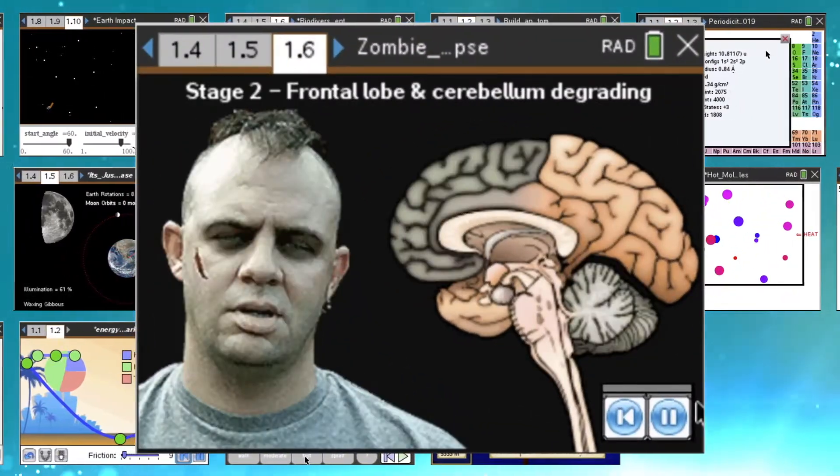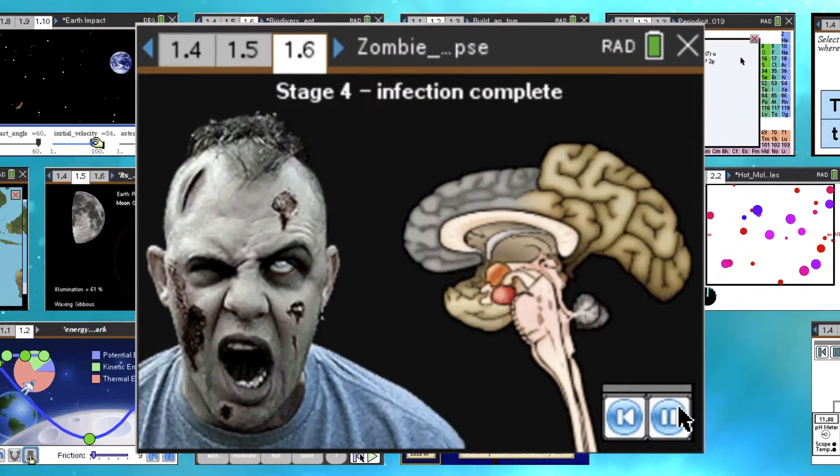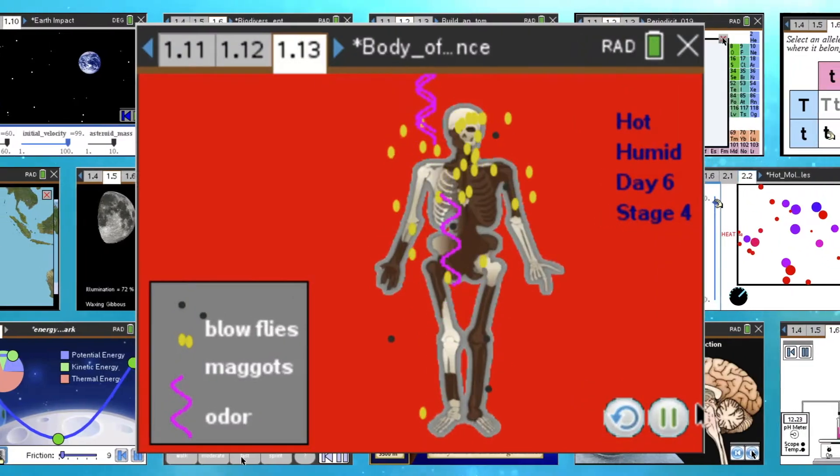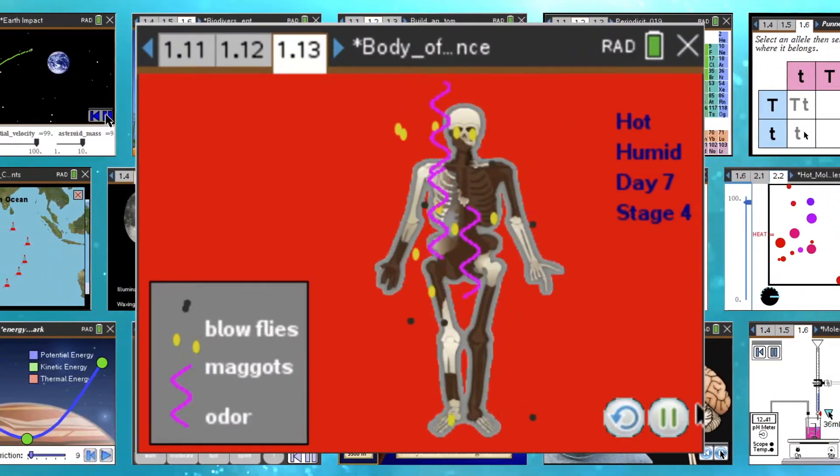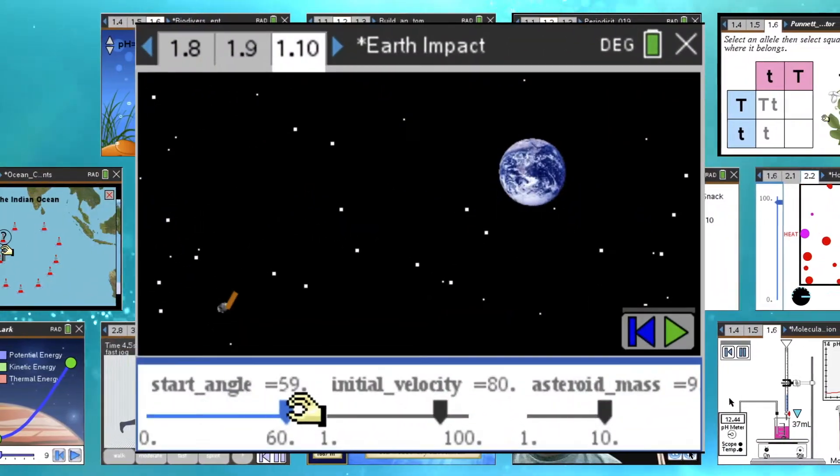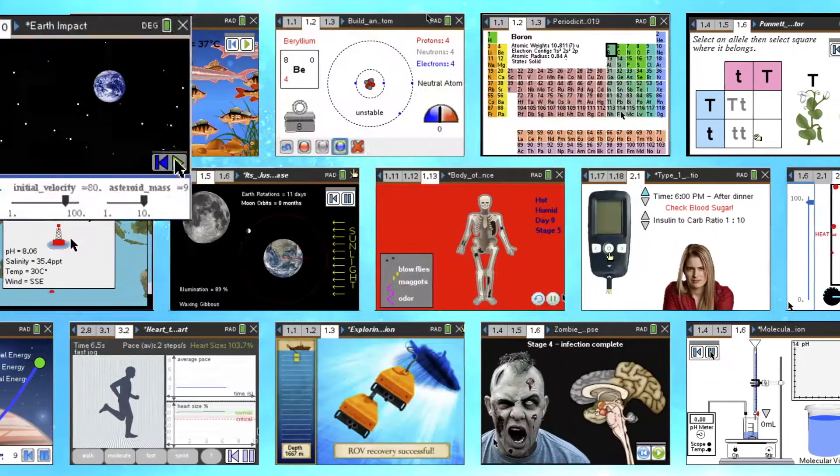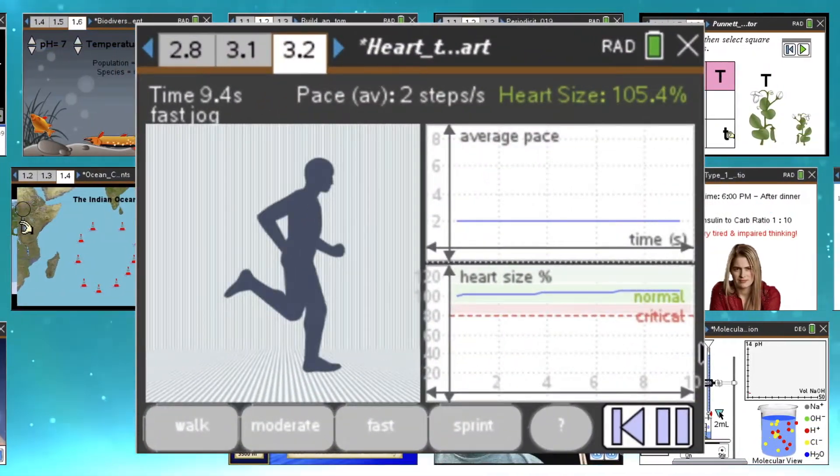Stop a zombie outbreak by identifying the cause of the disease and how it spreads. Use forensics to uncover clues and solve the case. Save the earth from an asteroid strike or get to work on the International Space Station.